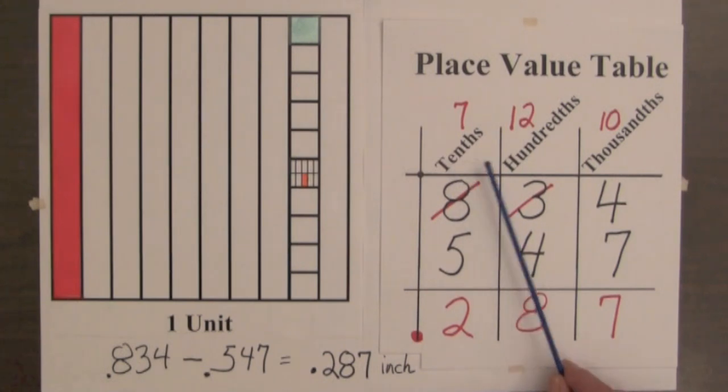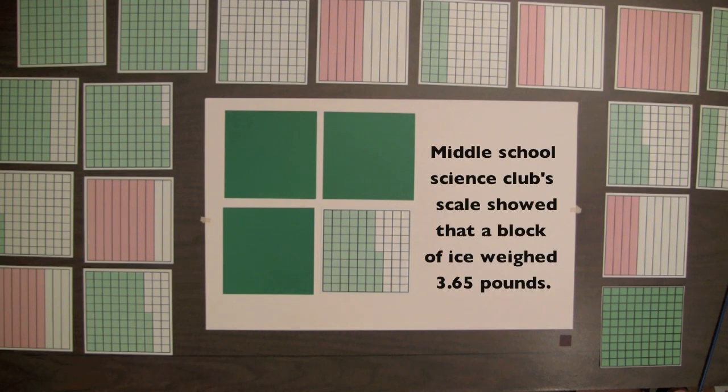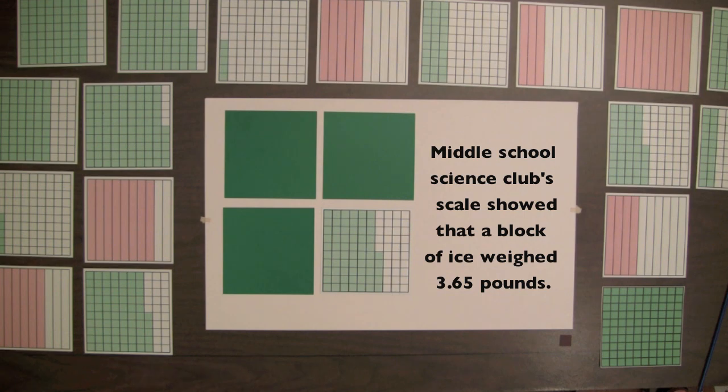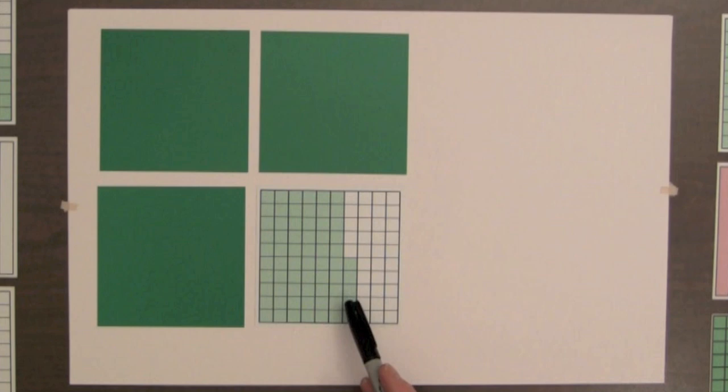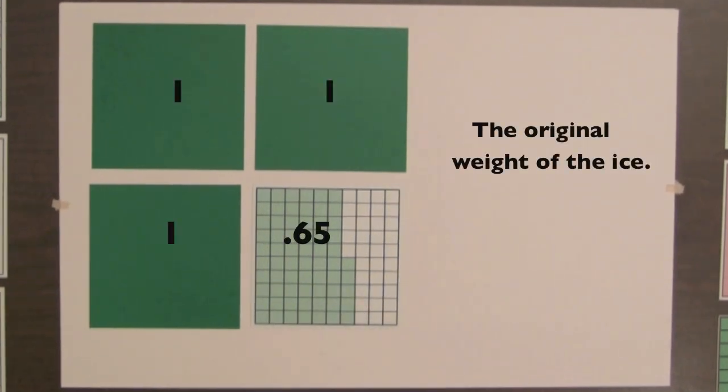Place value tables are intermediate steps between using decimal squares to subtract decimals and using subtraction algorithms or calculators. The middle school science club's scale showed that a block of ice weighed 3 and 65 hundredths pounds. These squares represent 3 and 65 hundredths pounds, the original weight of the ice.